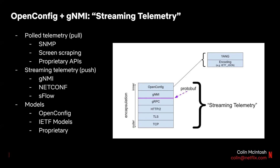At Netflix, GNMI is the protocol for streaming telemetry we've chosen to focus on and feel best suits our needs, but there are others too. You may also be familiar with NetConf, which provides some support for streaming telemetry, or SFlow, which streams flow data from routers, or even Syslog, which uses a similar push-based mechanism. This is a contrast to more traditional polling telemetry systems such as SNMP, screen scraping, or proprietary vendor APIs. We use OpenConfig data models at Netflix and encourage our vendors to do the same, but there are other models available such as IETF models or proprietary vendor-specific models.